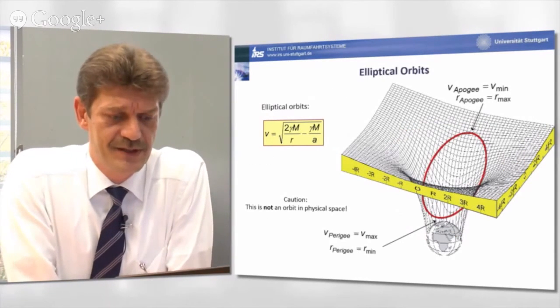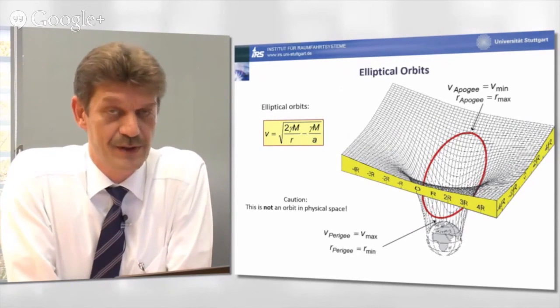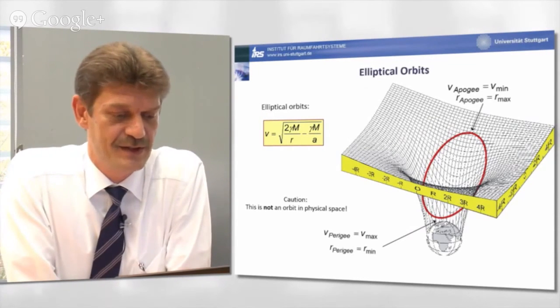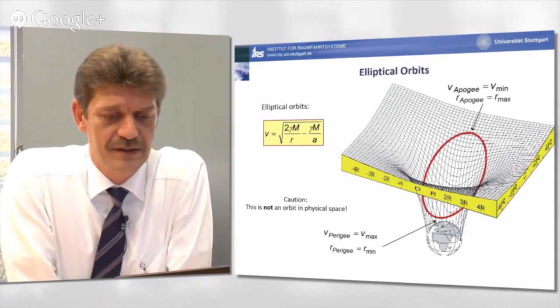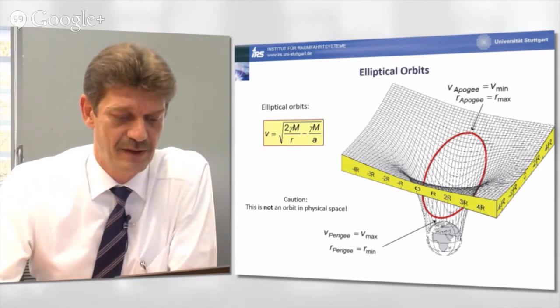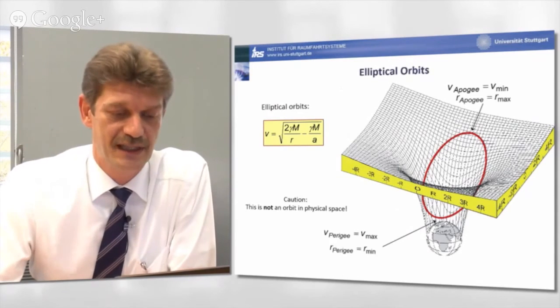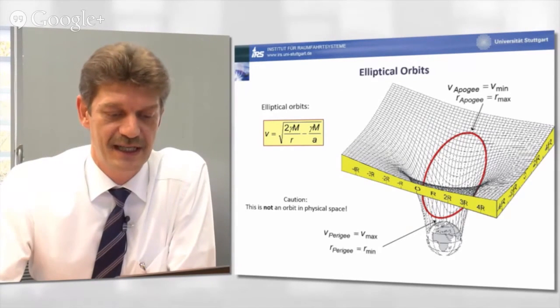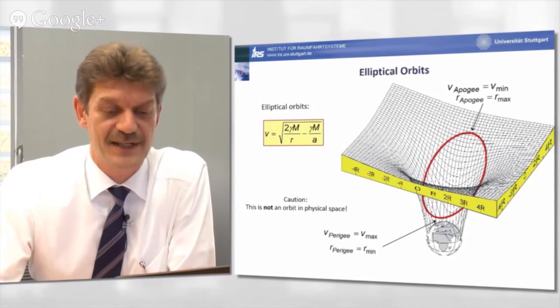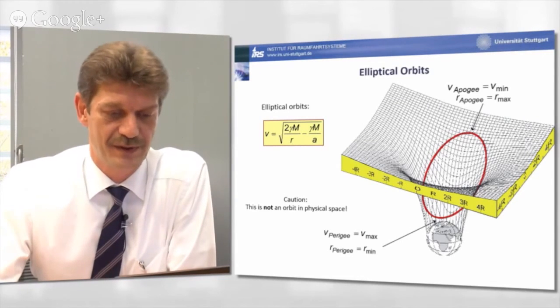A similar procedure also for elliptical orbits. The equation is a little bit more longer because we have now a semi-major axis, not a symmetrical orbit. But you can easily explain here why the velocity at the perigee, the closest point to the Earth, must be the highest velocity, and why the velocity at the apogee, the maximum distance from the Earth's center, must be the smallest velocity.